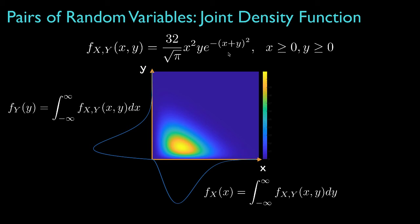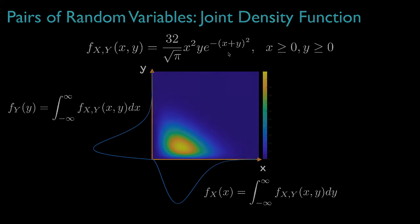Now, in subsequent lessons, we'll look into the concept of the joint density for a pair of random variables in more detail, and specifically, we'll discuss conditional densities and the concept of correlation and covariance.